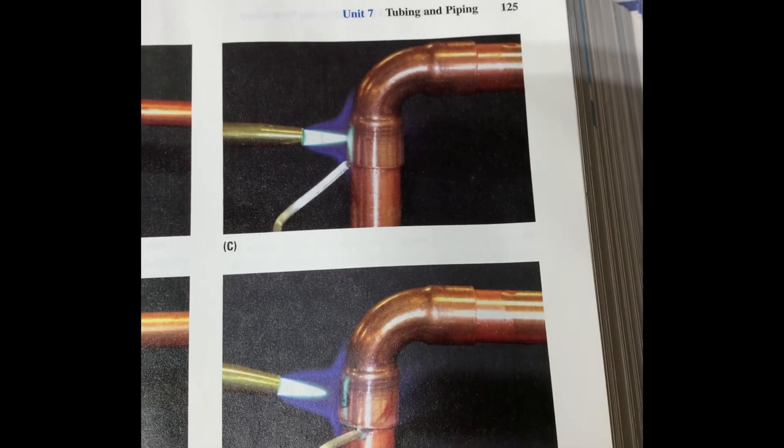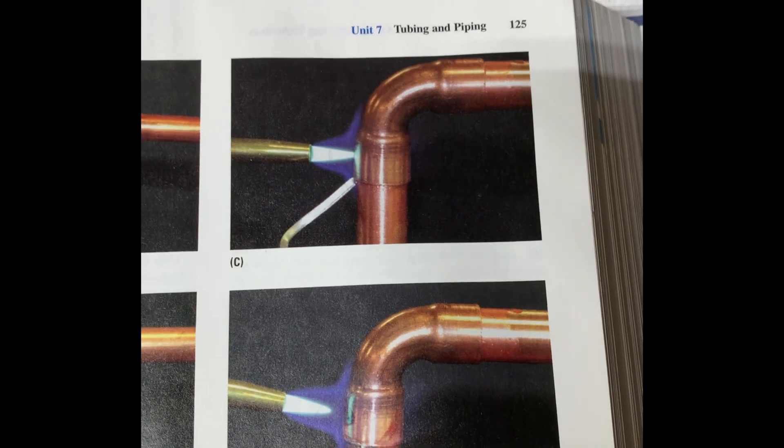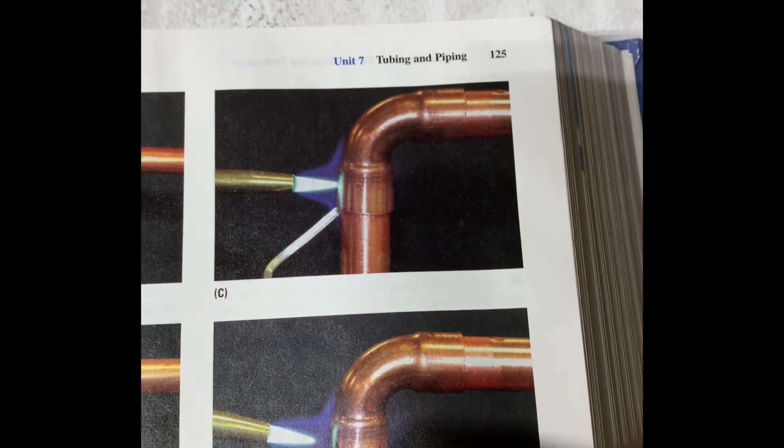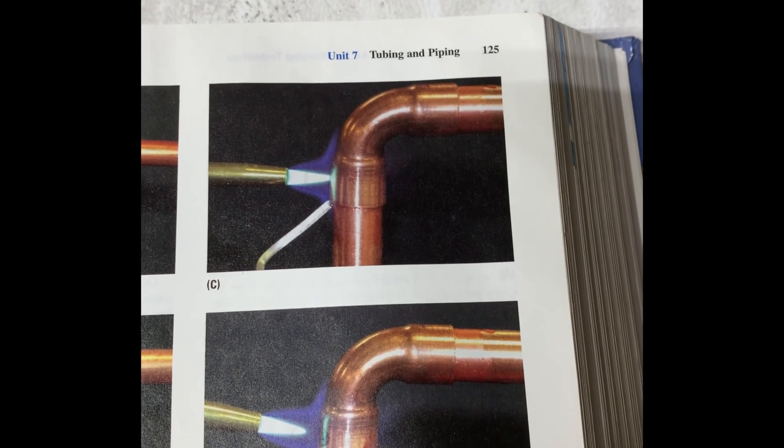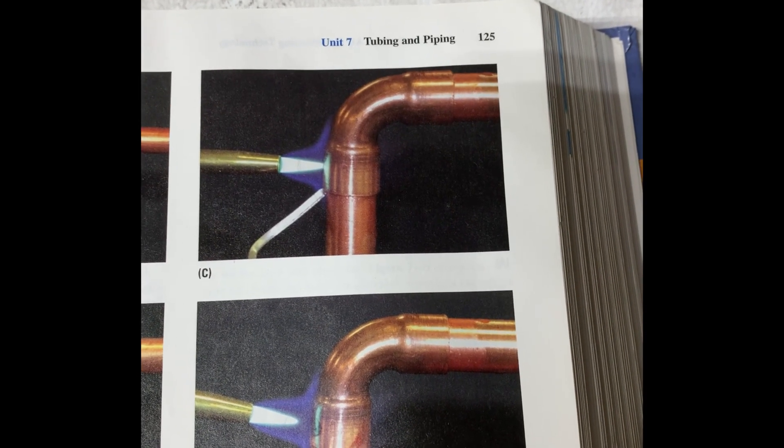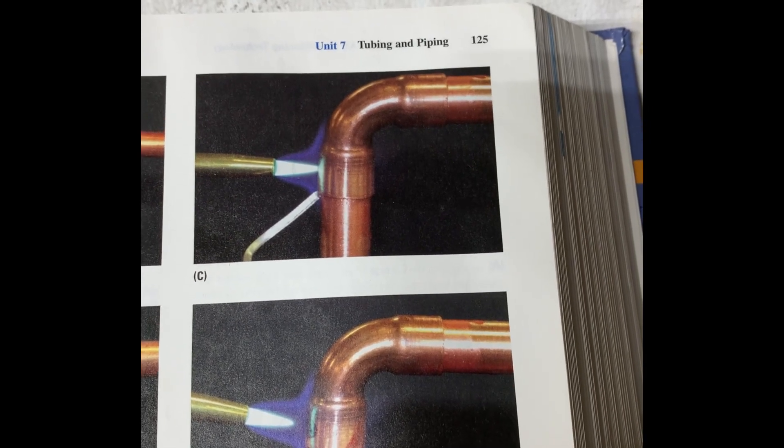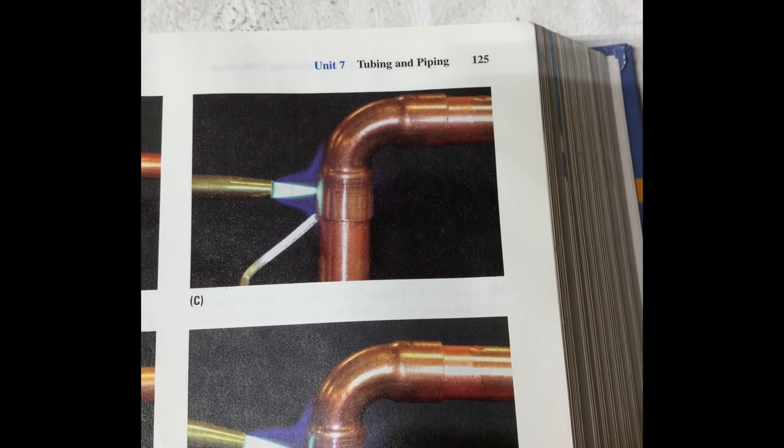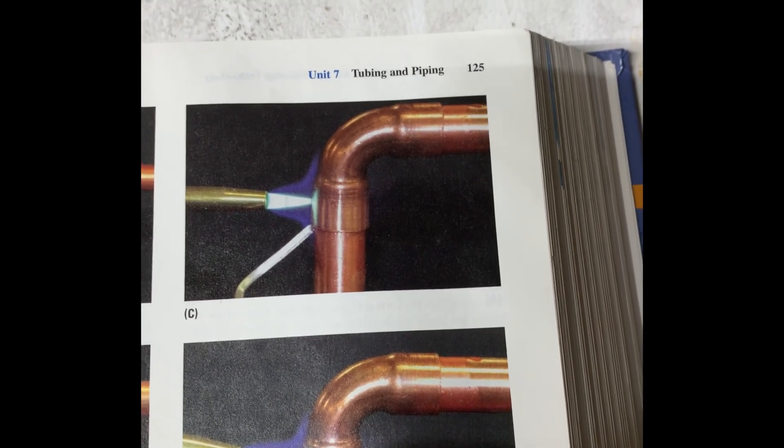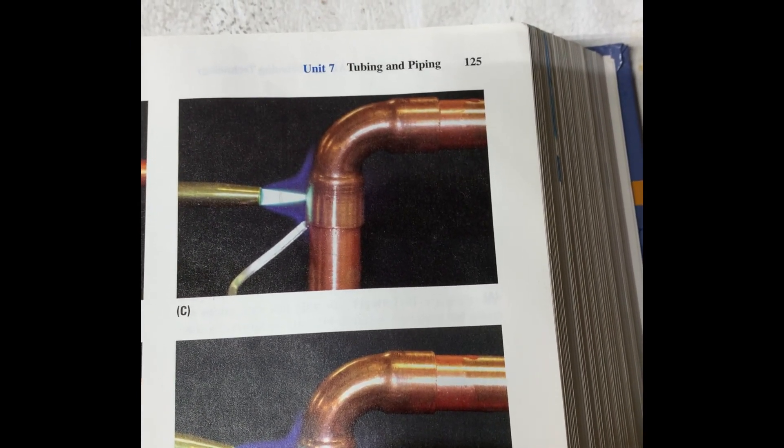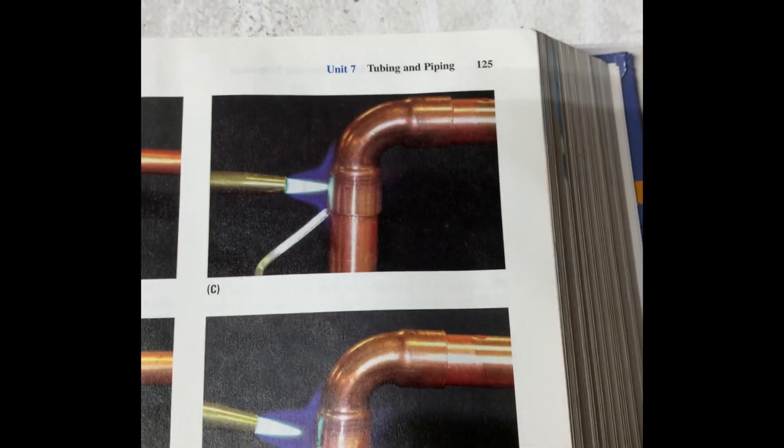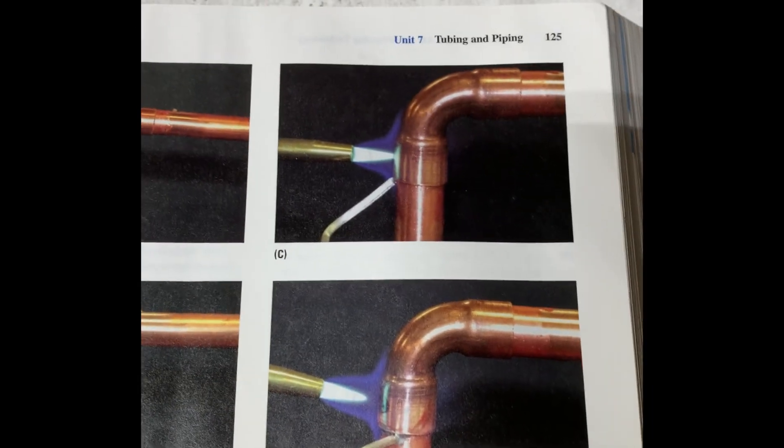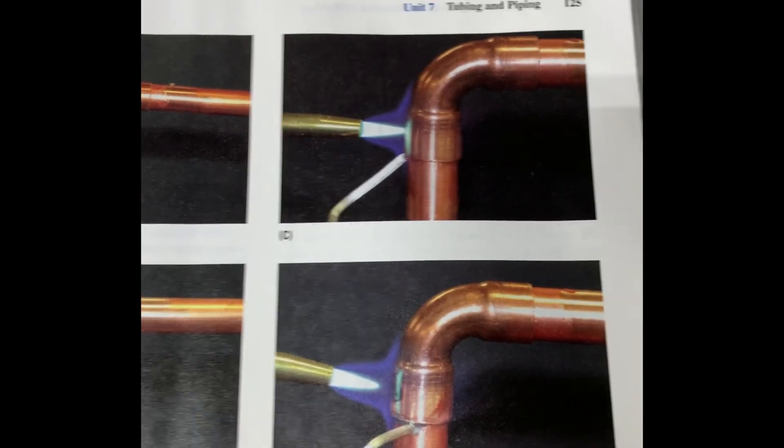And as you do that, that capillary attraction occurs and will suck that filler material into the joint and around the whole joint, and then fill that in. What you want is a nice, even or smooth transition from the pipe to the fitting. If you ran your fingernail or something across it, you wouldn't want to feel a hard lip on that. You just want a smooth transition, and that way you know you've got enough filler material and you're not going to get a callback or have a potential leak down the road.